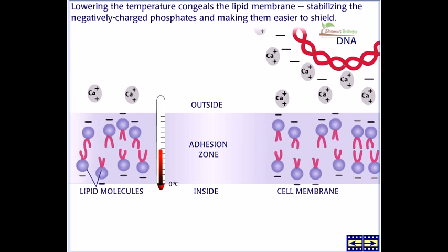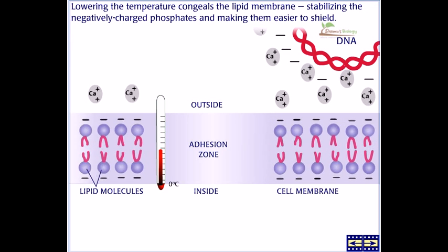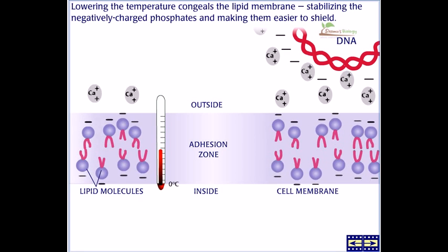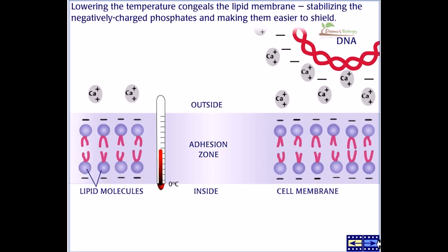Lowering the temperature congeals the lipid membrane, stabilizing the negatively charged phosphates and making them easier to shield.